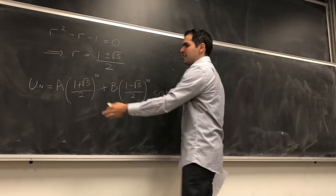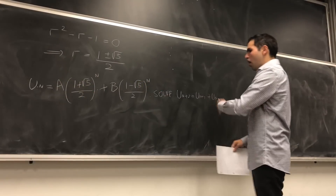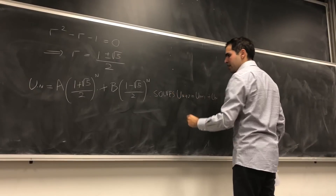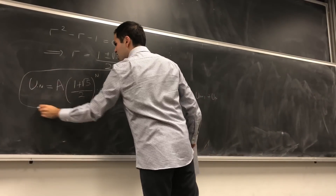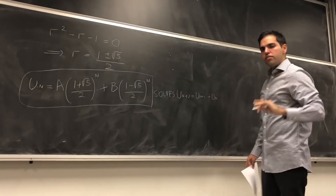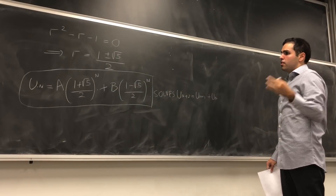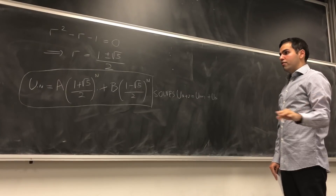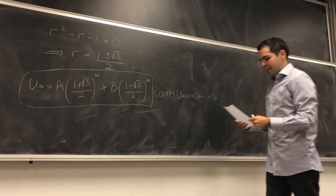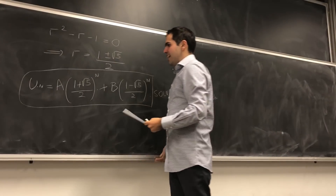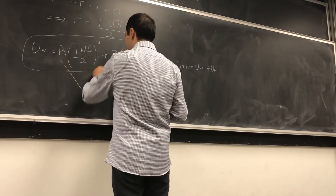In fact, u_n equals a times (golden ratio to the n) plus b times (the other root to the n) also solves our equation. There could be other solutions, but it turns out those are all of them. Even so, we can still solve for a and b — that's the next thing we have to do.